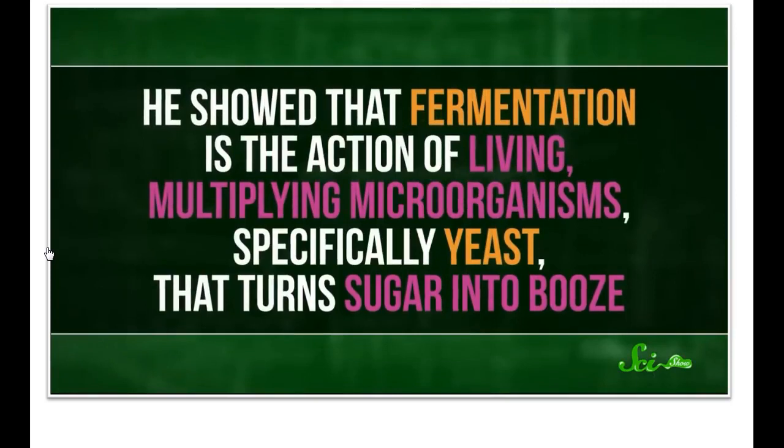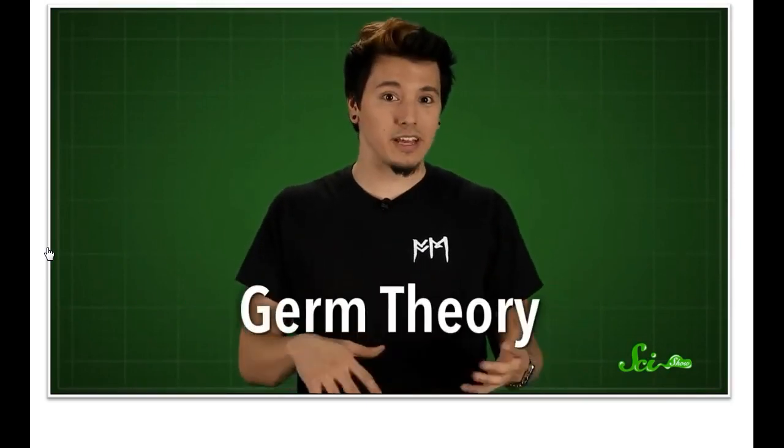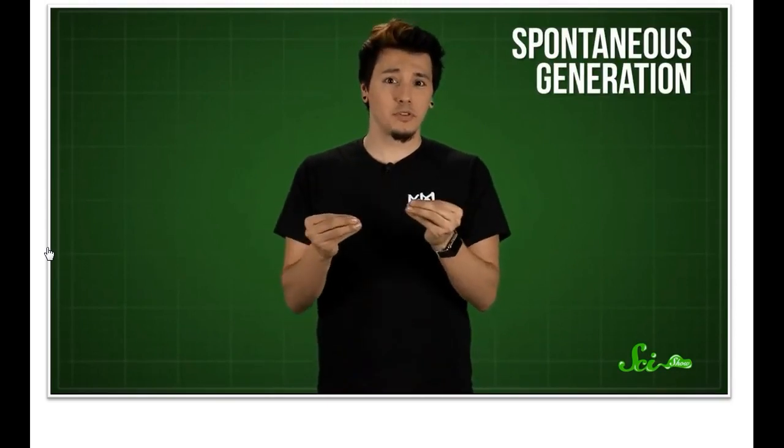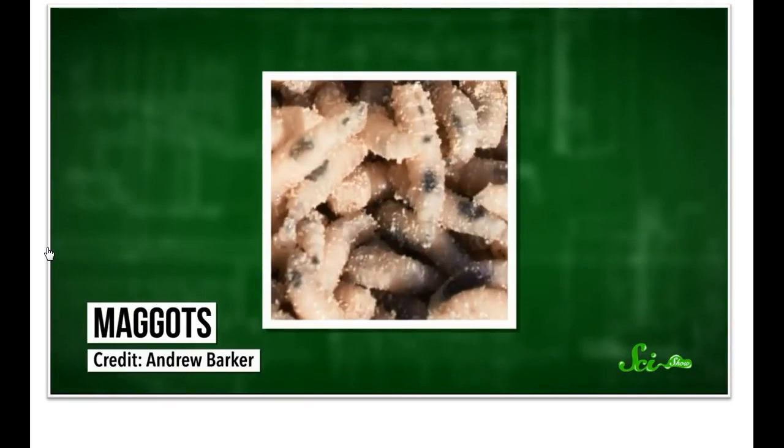It was France, of course. People had been making alcoholic beverages since practically forever, but it was Pasteur who gave us a modern understanding of the fermentation process. He showed that it's the action of living, multiplying microorganisms — specifically yeast — that turns sugar into alcohol. Back then, people didn't know much about microbes. There had been some speculation about germ theory, but the prevailing scientific theory was spontaneous generation — the notion that some organisms just appeared out of thin air or came to life from decaying organic matter. For a long time, people thought baby mice came out of decaying hay and maggots were born from rotting meat. Even after those specific things were disproven, people still believed spontaneous generation occurred under certain circumstances.